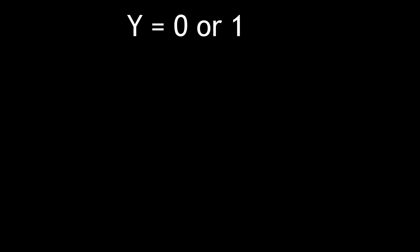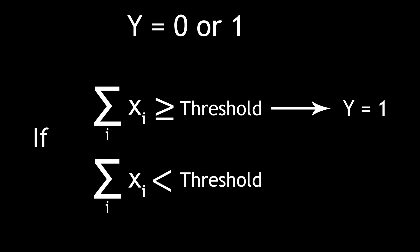The output itself also has to be binary. So how do we deal with this? Well, we say that if the sum of the inputs is greater than or equal to some threshold, then y is equal to 1. If the sum of the inputs is less than the threshold, then y equals 0.